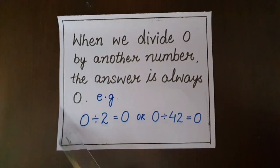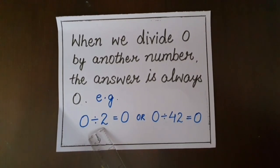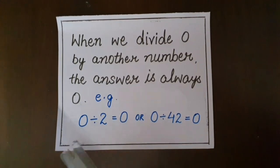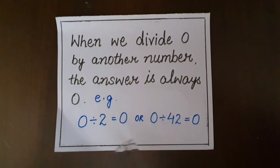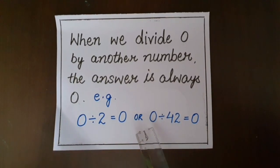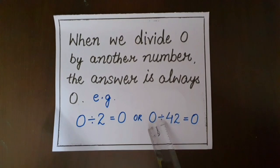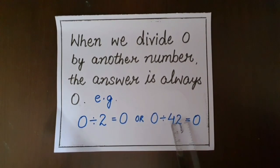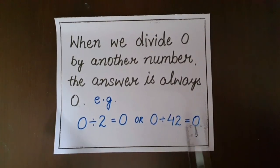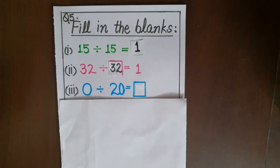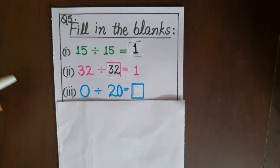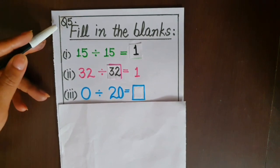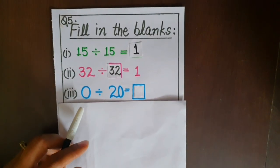For example, if we divide zero by two, the answer will be zero. Let's take another example: if we divide zero by 42, then also the answer will be zero.